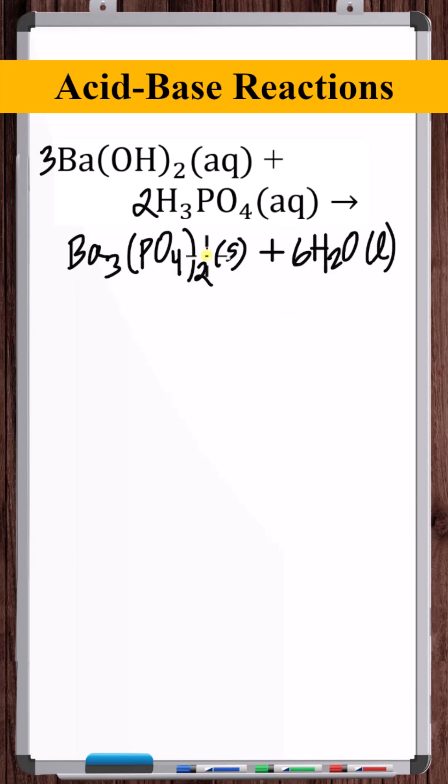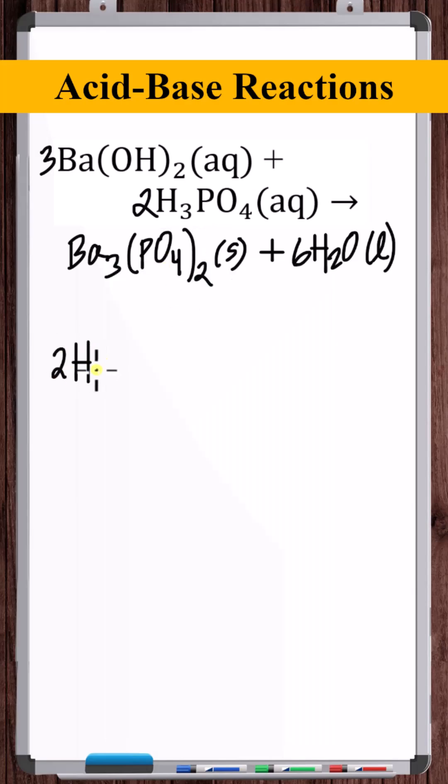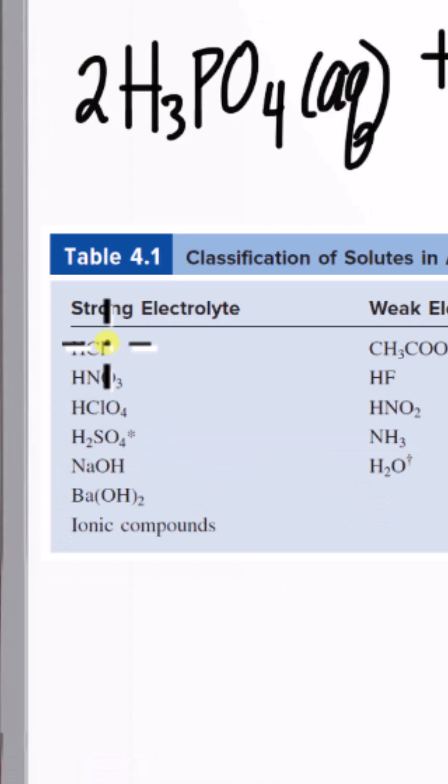To write the ionic equation, we break up any compounds into ions that are strong electrolytes in the solution. We'll start with the acid. Phosphoric acid is aqueous, but it's a weak acid. So in the ionic equation, we don't break up weak acids, weak electrolytes. Barium hydroxide is a strong electrolyte, which means it's a strong base.